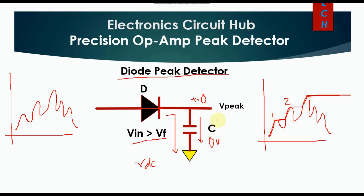Now your input signal never exceeds the voltage at the capacitor, which equals the third peak. So this capacitor holds the peak value which is equal to the third peak.